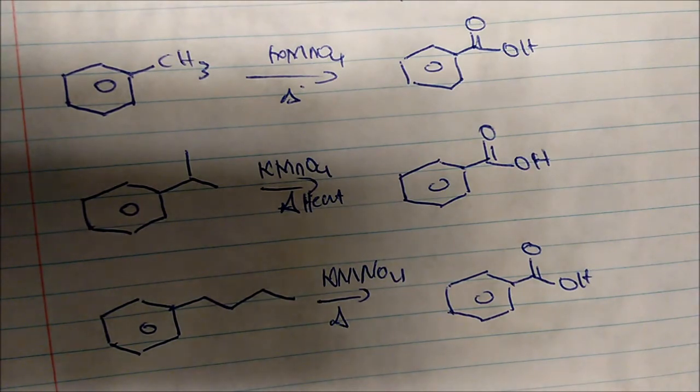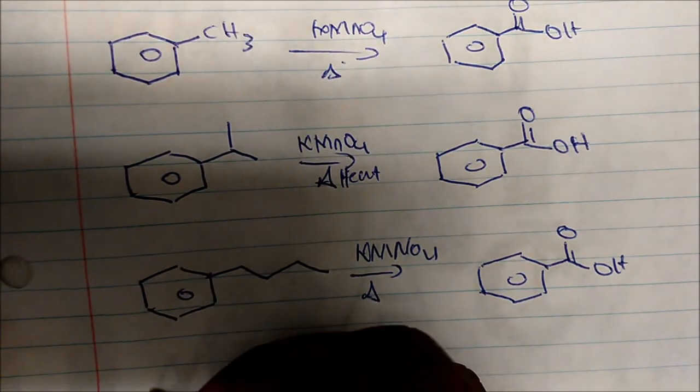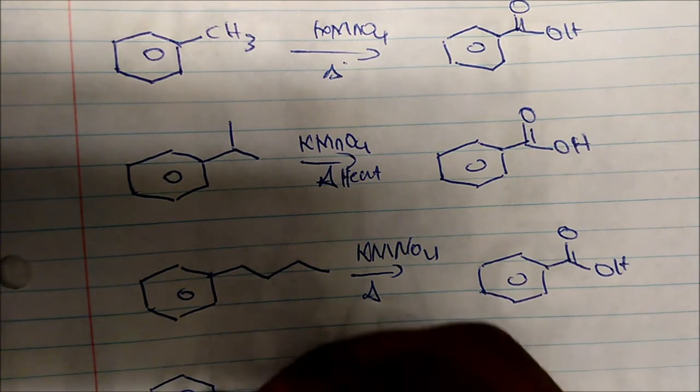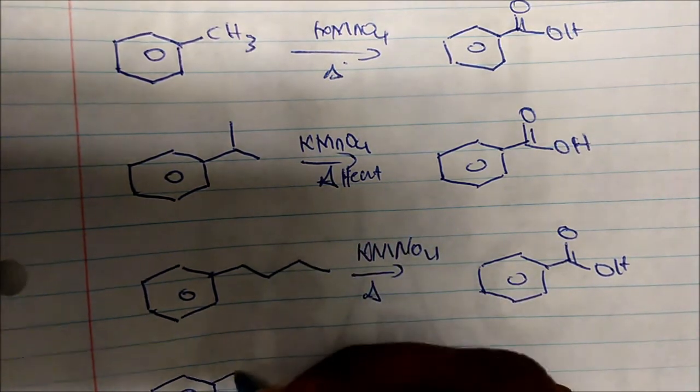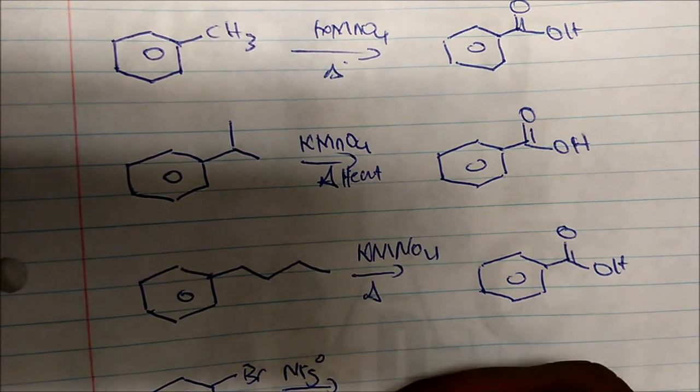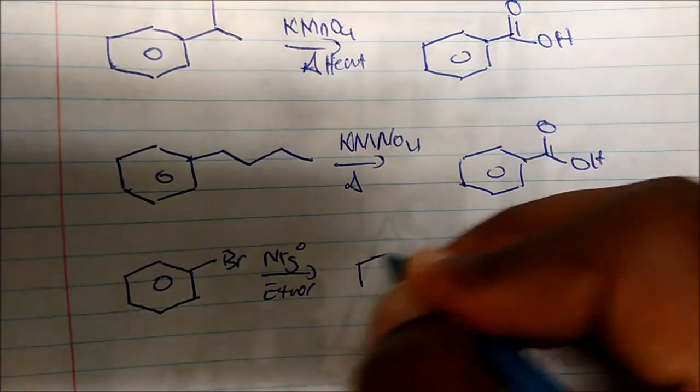Very general reactions that you should know. I also want to point out something. You could also make the carboxylic acid by using benzobromide. And you add magnesium in ether, so if you add magnesium in ether, you will create the Grignard reagent.